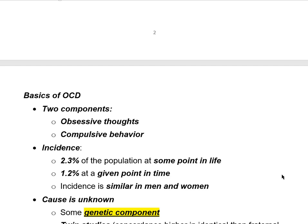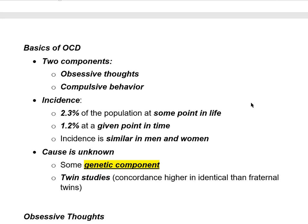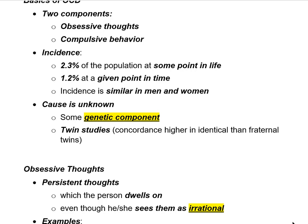What causes OCD? Nobody can say for sure. There appears to be a genetic component — twin studies show that the concordance rate is higher among identical twins than among fraternal twins, which is the signature of a disorder that probably has a genetic component. Beyond that, there's no real consensus as to what causes OCD. Now let's go into detail on the two components of OCD: obsessive thoughts and compulsive behaviors.